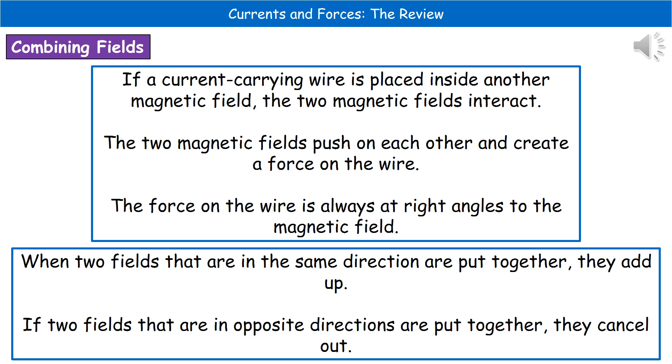As we've already established in one of our earlier lessons, as soon as a current flows through that wire, it generates a magnetic field of its own. So if we take that current-carrying wire and place it into an existing magnetic field, those two magnetic fields are going to interact.